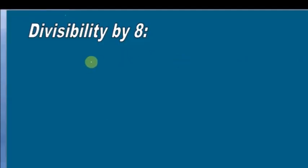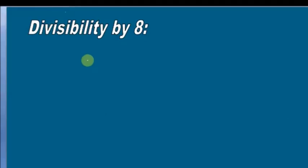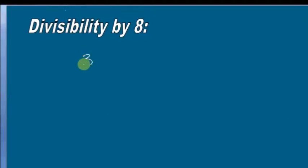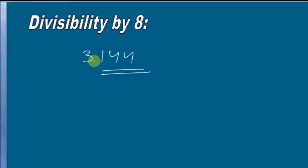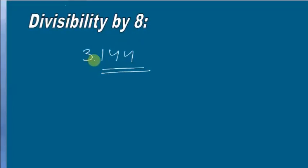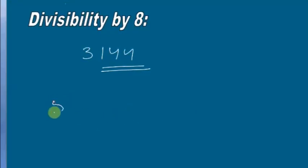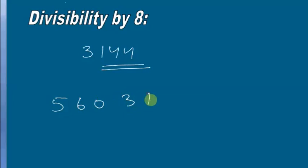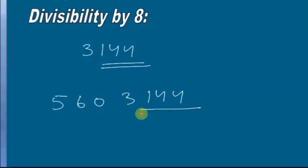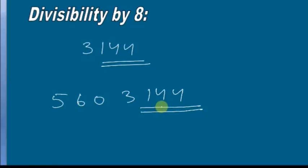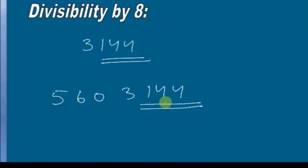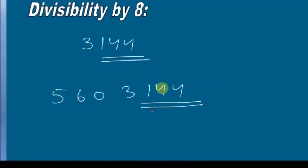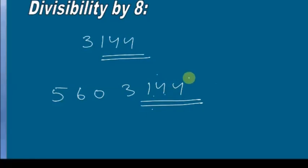Next comes divisibility by 8. I will not recommend using this rule frequently because it is not so handy. The rule states that if the last 3 digits of a number are divisible by 8, then the number is divisible by 8. It is only handy for very large numbers. For example, if a number ends in 144, you check whether 144 is divisible by 8. Since 144 ÷ 8 = 18, the entire large number is divisible by 8.